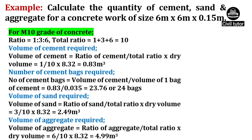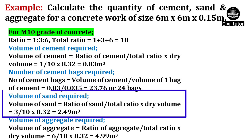Volume of sand required will be calculated using the formula: ratio of sand upon total ratio, multiplied by dry volume. Ratio of sand is taken as 3, total ratio is 10 and dry volume is 8.32. So on substituting these values, volume of sand will be equal to 2.49m³.